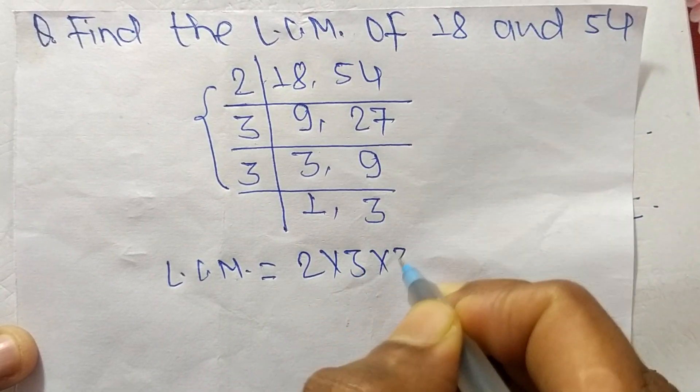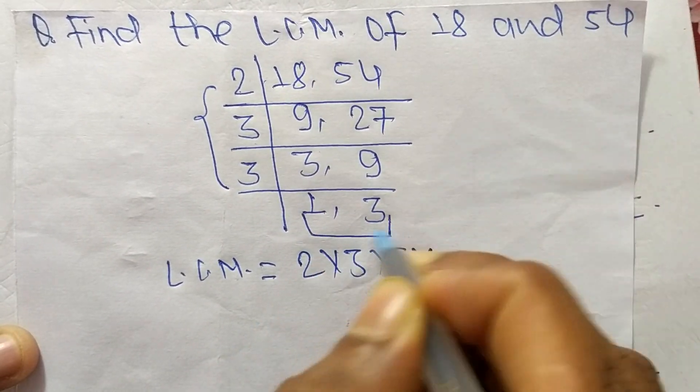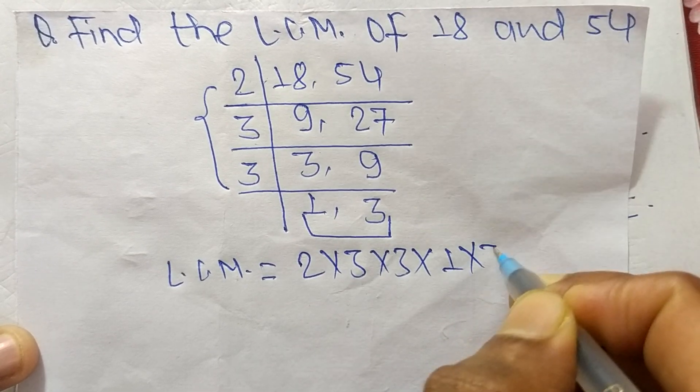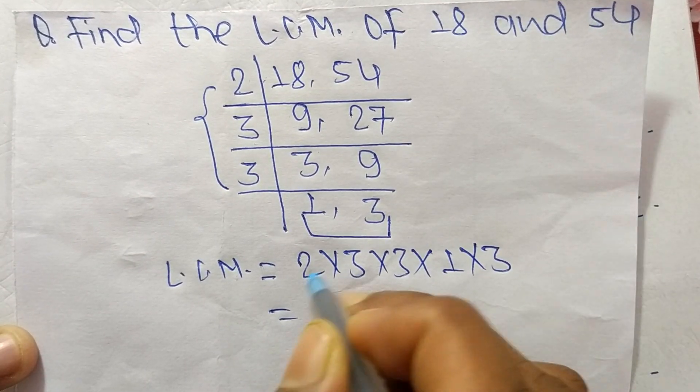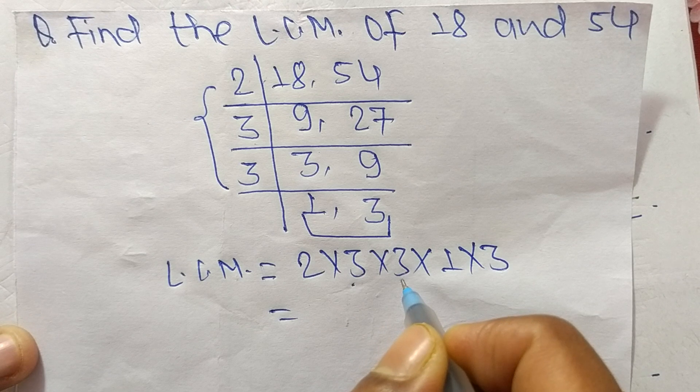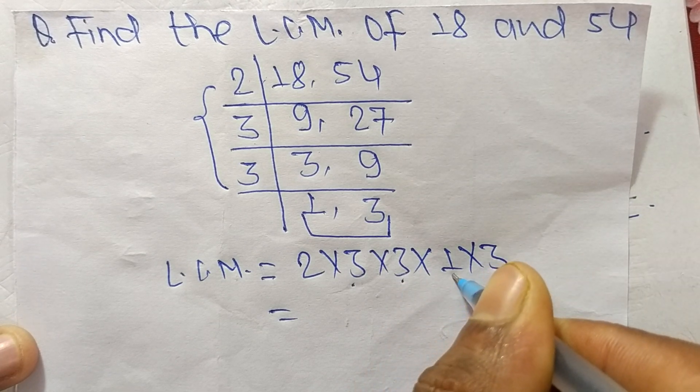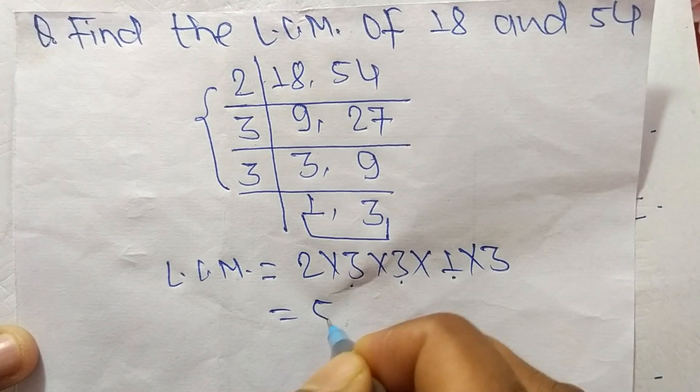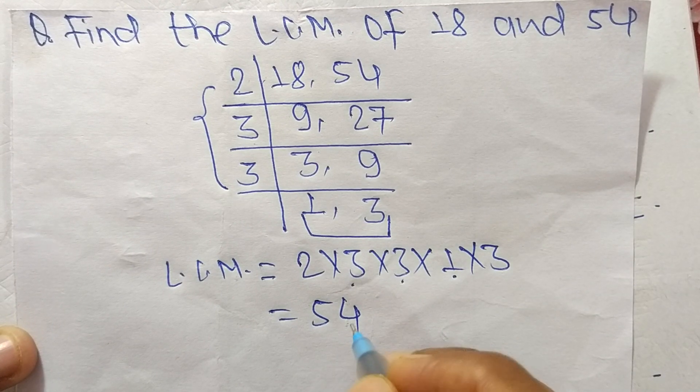And from this part it is 1 times 3. So 2 times 3 means 6, 6 times 3 means 18, times 1 it is 18, and times 3 means it is 54. So 54 is the LCM of 18 and 54.